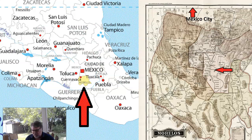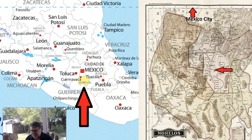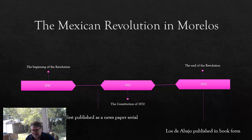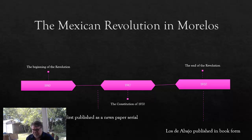Zapata was from a very small village. The town of Ayutla is just below that, and that's where the famous Plan de Ayutla was announced. The Mexican Revolution in Morelos — the Mexican Revolution in general began around 1910 when Porfirio Díaz refused to step down, and it devolved into a civil war after the assassination of Francisco Madero.